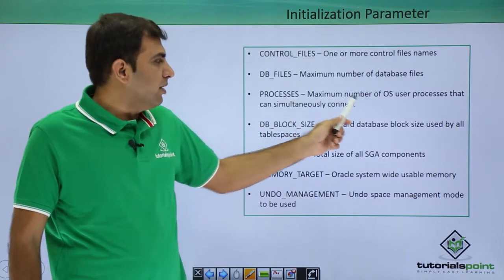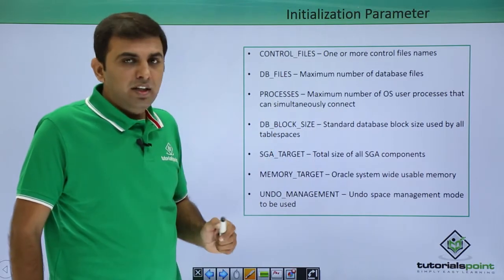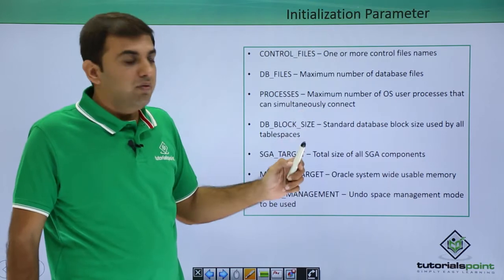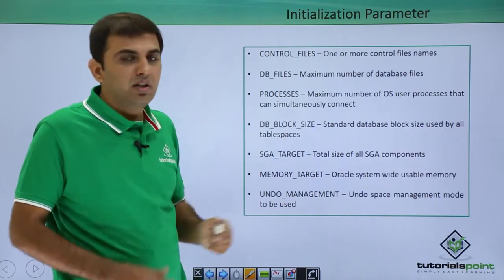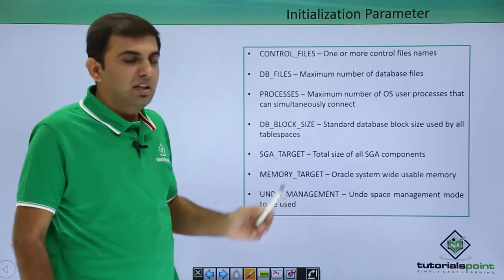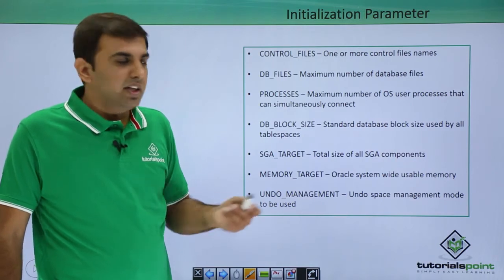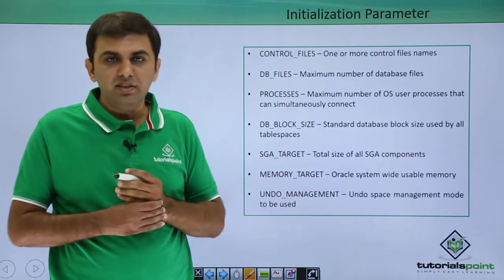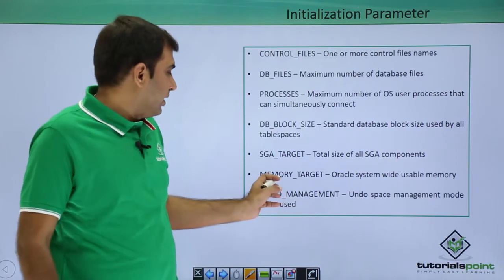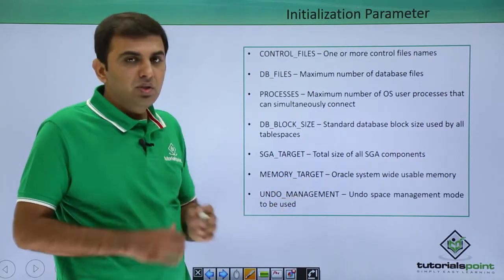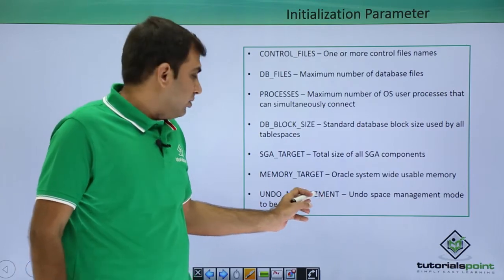The processes parameter defines the maximum number of OS user processes that can connect simultaneously — you can define that maximum number under this processes parameter. The db block size parameter defines your database block size: 8KB, 16KB, or 32KB. The SGA target parameter defines the size of the SGA. Memory target defines the total memory used by Oracle. For undo management, you can define whether it is auto or manual under the undo management parameter.